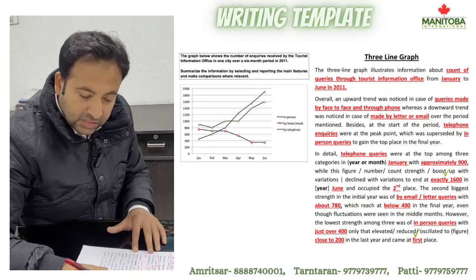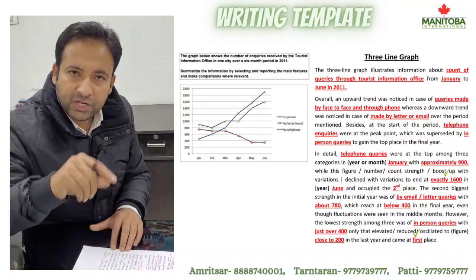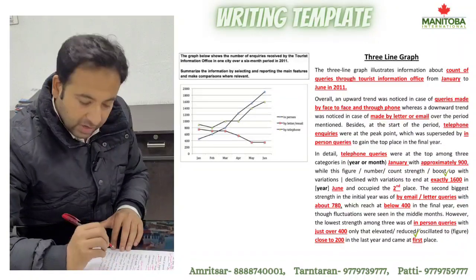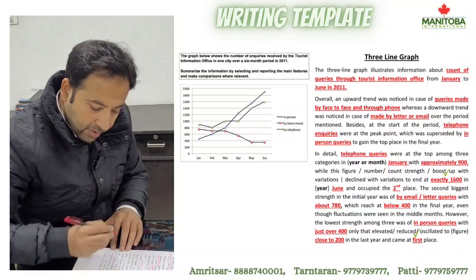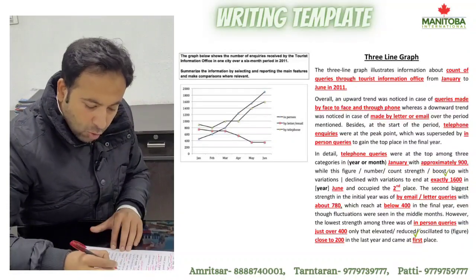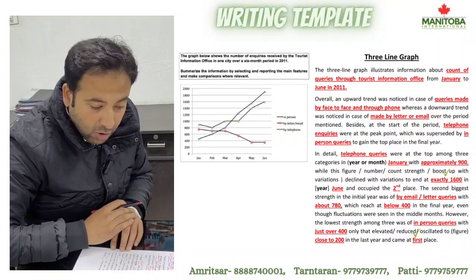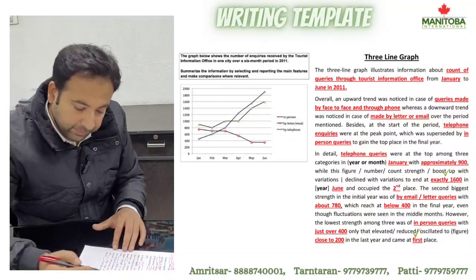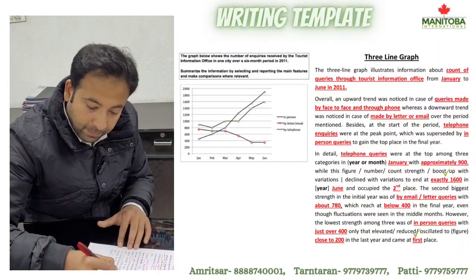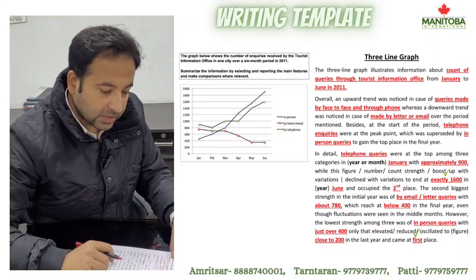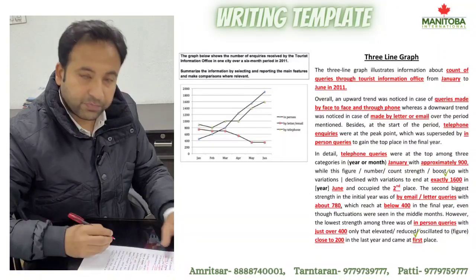Telephone inquiries boosted up with variations — variations means fluctuations, up and down — but it kept on increasing, which is called 'boost up with variations,' to end at exactly 1,600 in June, and occupied second place. The second biggest figure in the initial month was email or letter queries — I need to write down the number.